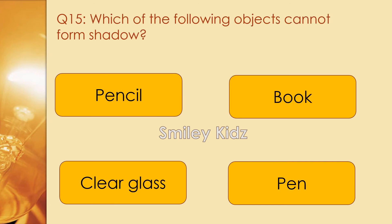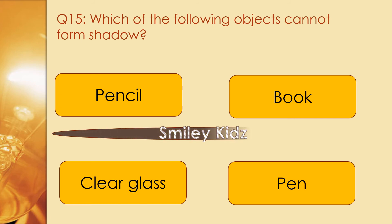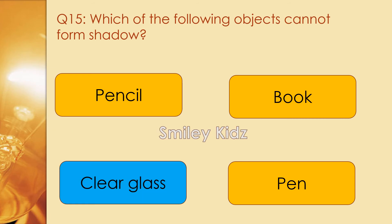Question number 15. Which of the following objects cannot form a shadow? Options are pencil, book, clear glass, and pen. The right answer is clear glass. Clear glass cannot form a shadow.